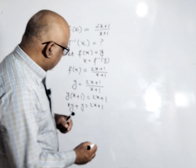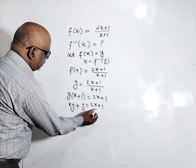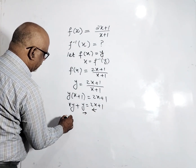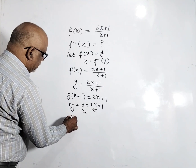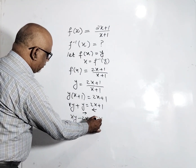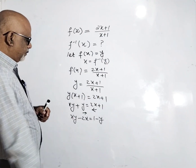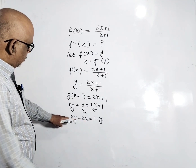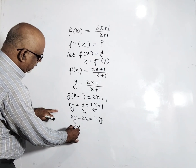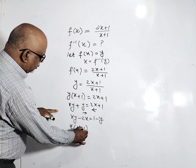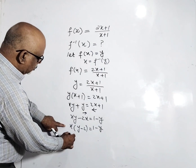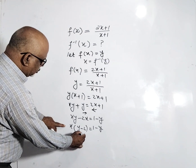Now we have to isolate x, so we shift the x terms to one side and the y terms to the other side. This gives us xy minus 2x equals 1 minus y. Taking x common, we get x(y minus 2) equals 1 minus y.